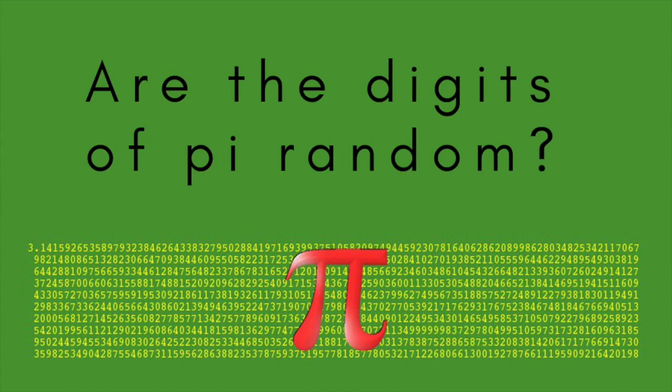This question of whether pi is normal or not raises the closely related question of whether the digits of pi are random. Currently, the value of pi is known to about 22 trillion decimal places. These known digits will never change, no matter how many times the calculation is run.